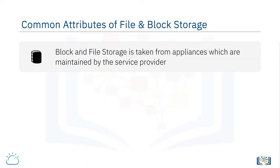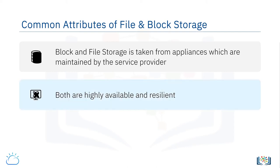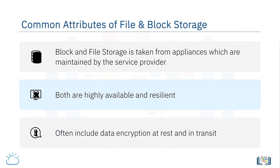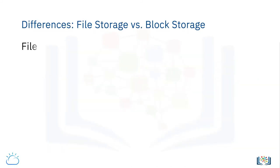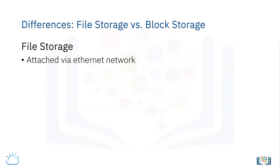To summarize the commonalities and differences between these two storage types: block and file storage is taken from appliances which are maintained by the service provider. Both are normally highly available and resilient, and will often include data encryption at rest and in transit.